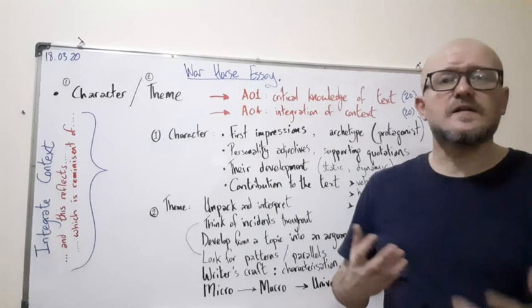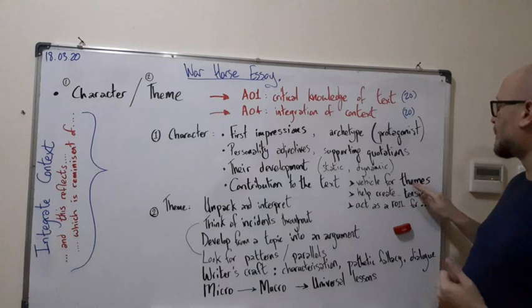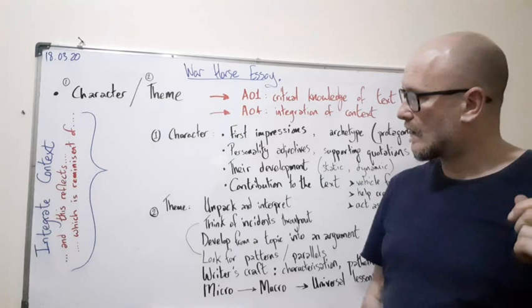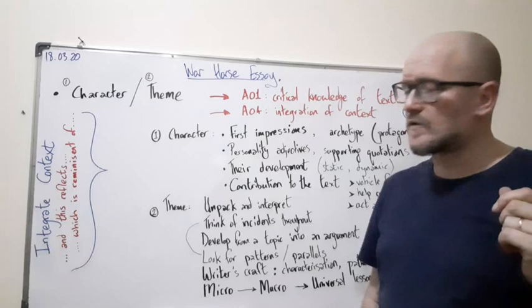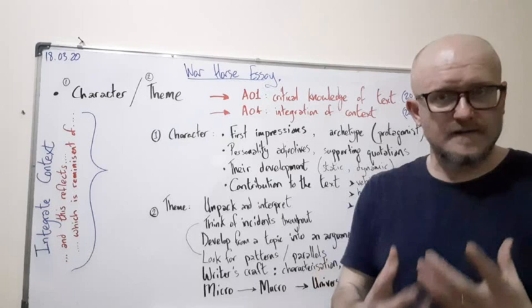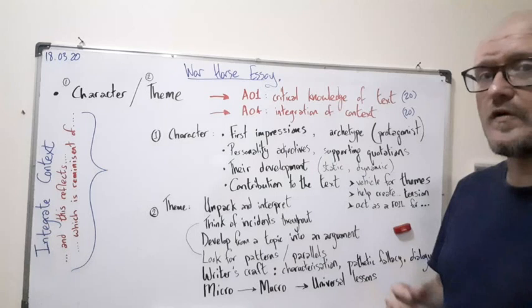Contribution to the text—this could be for any character, but we'll take Ted Narcott. He is a vehicle for certainly the theme of conflict, of the effect of war. There are some hints that he fought in, I think it was the Boer War. Anyway, he was involved in war himself, and there's a suggestion, certainly in the movie, that this has affected him, that this might be one of the reasons why he is an alcoholic and has all these different flaws as a result of that. So he's a vehicle for that.